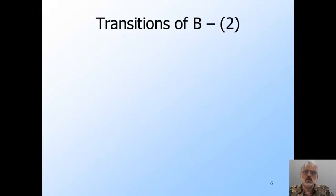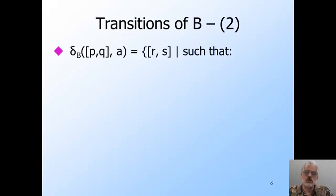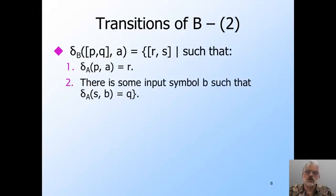Now we need to design the transitions of B so that after the initial epsilon move, it is only in the states we said it should be in given the interpretation we put on a pair of A's states PQ. So the transition from state PQ of B on an input symbol A will be to those pairs of states RS that satisfy two conditions. First, as we wanted, the first component of B's state just tracks A's state. That is, R is where DFA A goes on input A when it is in state P. The second condition concerns the second component. There must be some input symbol B such that A goes from S to Q on input B. Notice the transition is from the new second component to the old second component, so the new second component has a path to acceptance that is one longer than before.